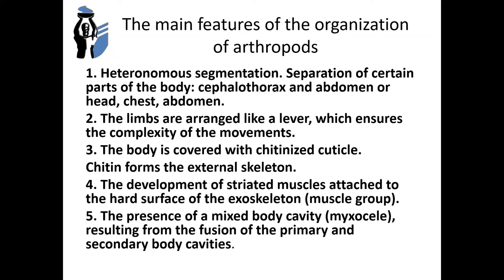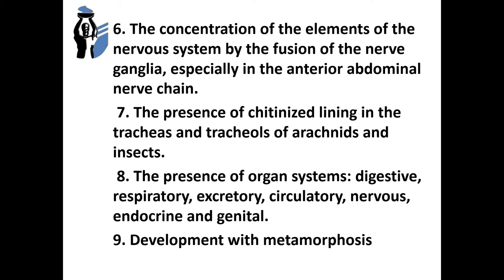The limbs are arranged like a lever, which ensures the complexity of movements. The body is covered with chitinized cuticle; chitin forms the external skeleton. The development of striated muscles is attached to the hard surface of the exoskeleton. There is a mixed body cavity, myxocoely, resulting from the fusion of the primary and secondary body cavities. The nervous system shows concentration of neural ganglia, especially in the anterior abdominal nerve chain.